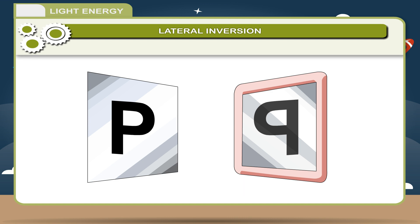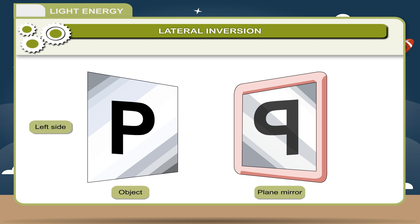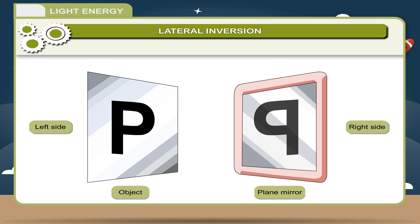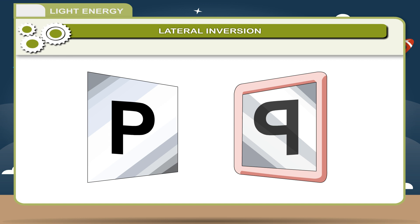There is a point correspondence between the object and its image in a plane mirror. So the left side of the object appears as the right side in its image in the mirror. All images formed by plane mirrors are laterally inverted. When reflection of light takes place in a plane mirror, the left-hand side of the object appears as the right-hand side of the image and vice versa. This phenomenon is called lateral inversion.